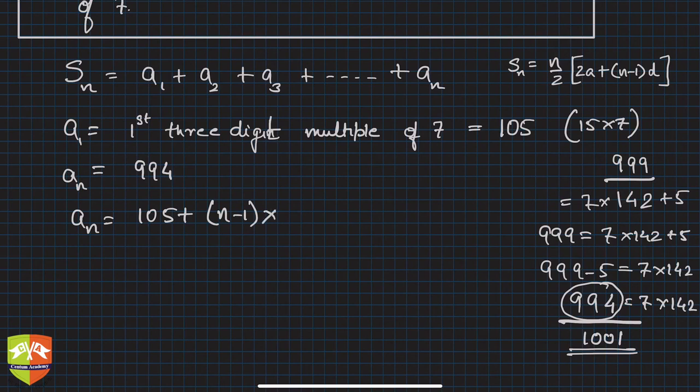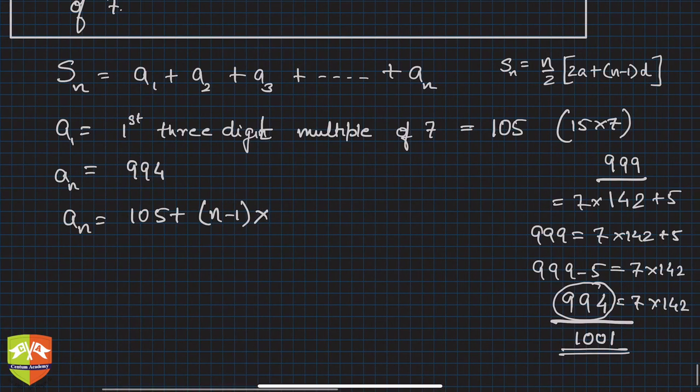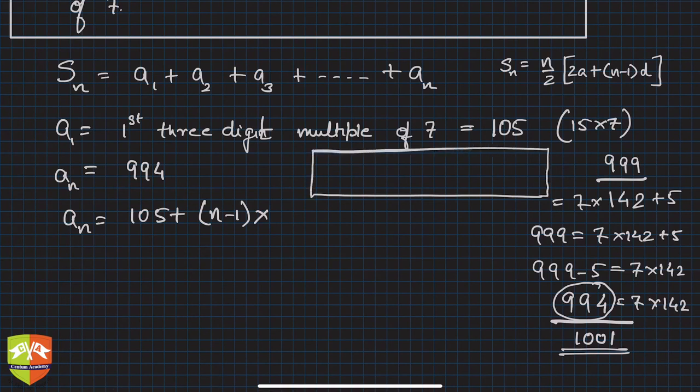Now if you check the series, what will the series be like? Let me write a few terms - multiples of seven. So 105, 112, 119, 126, and so on and so forth till 994. Clearly common difference d is seven.